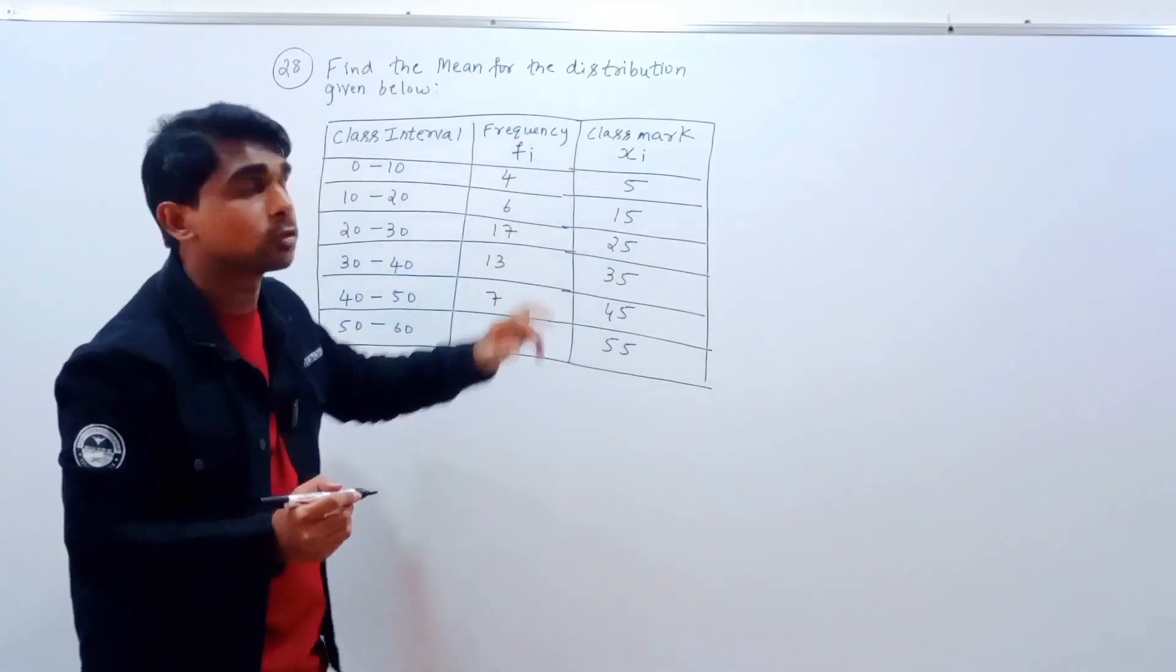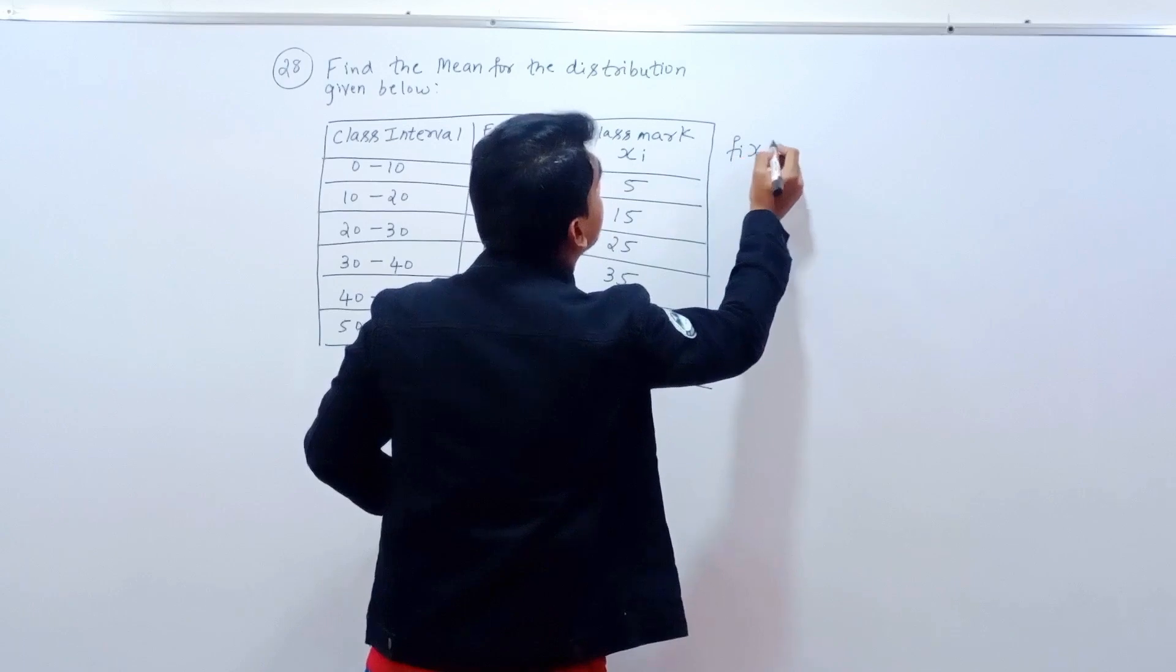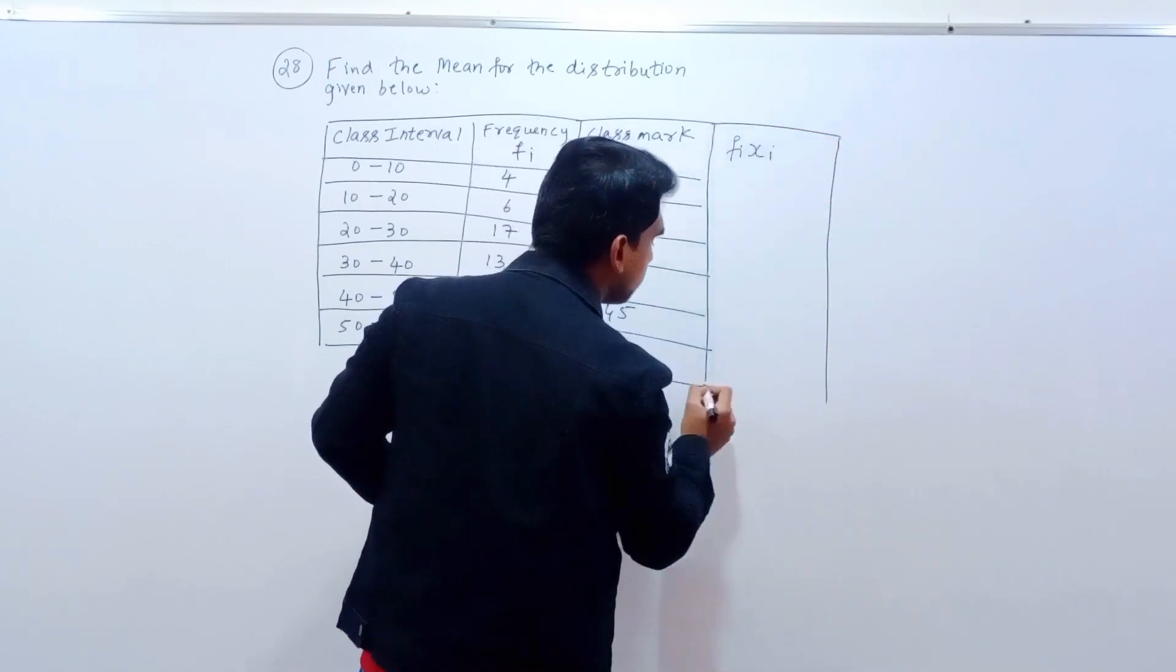Frequency and class mark. Next step: f i times x i.